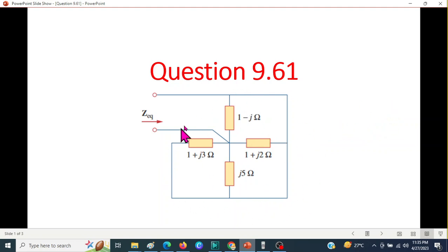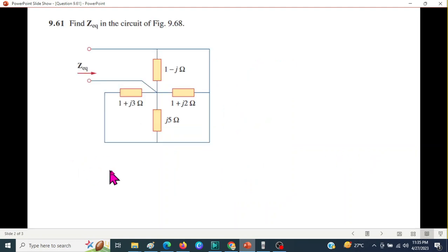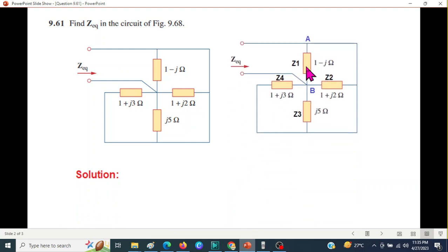Let's see what I have done. I have marked these elements as shown here, so I have written them Z1, Z2, Z3, and also have marked these two terminals as A and B.